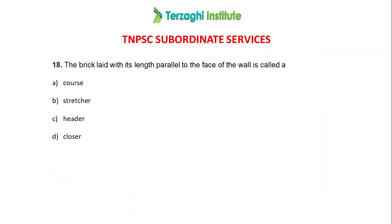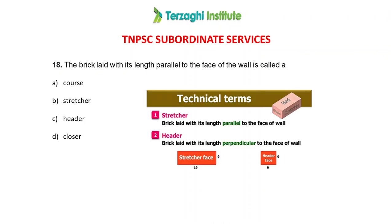Next question: the brick side which has its length parallel to the faces of the wall is called what? If the length is parallel to the wall face, it is called a stretcher. If it is perpendicular, it is called a header. The top layer is called the bed face. The answer is Option B — Stretcher.